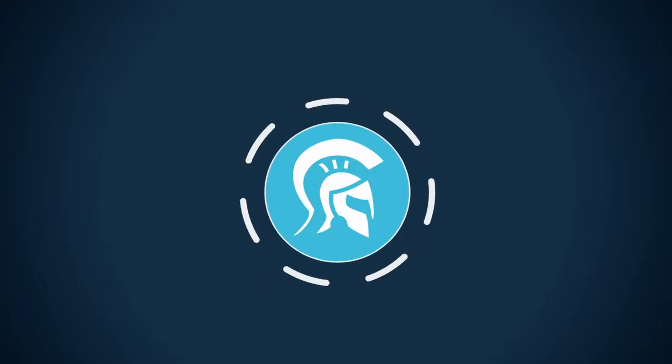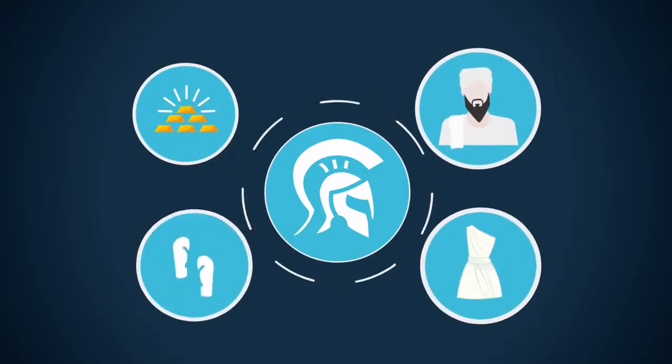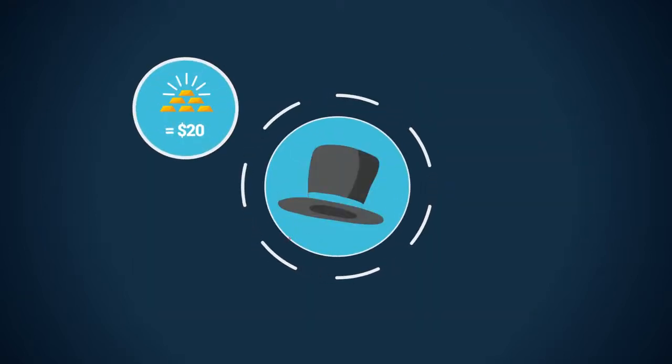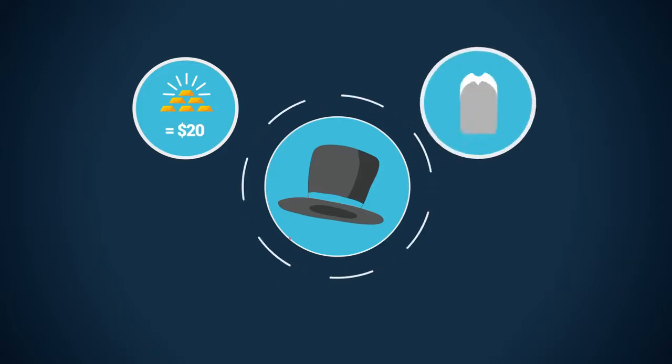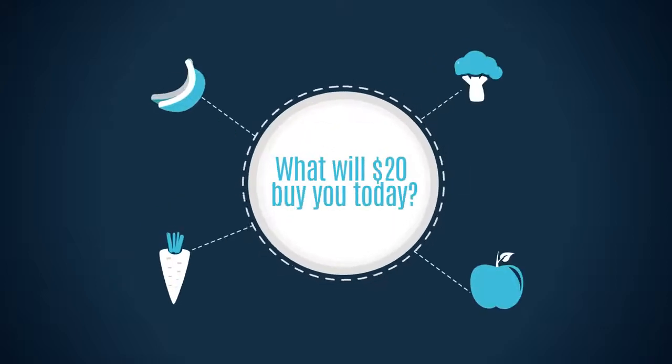In Roman times, one ounce of gold would clothe a person, buy a toga and pair of leather sandals. One hundred years ago, one ounce of gold was priced at twenty dollars and would clothe a person with a three-piece suit, shirt, tie, and leather shoes. What will twenty dollars buy you today?